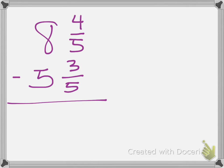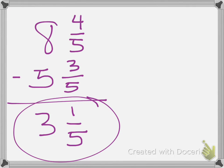One more example, 8 and 4 fifths minus 5 and 3 fifths. That leaves me with 1 fifth, and then I have 3 left here. So again, subtraction is a little bit easier to work with.